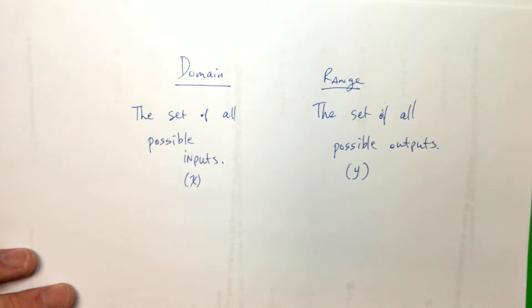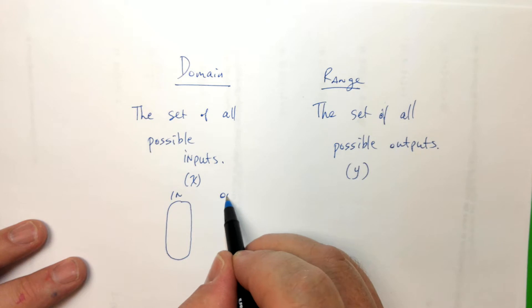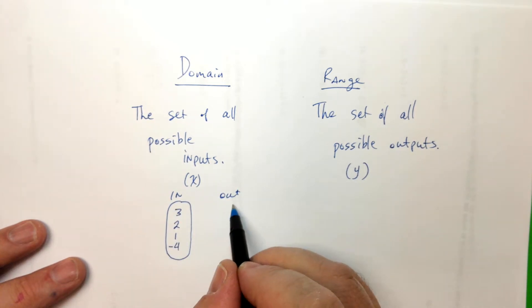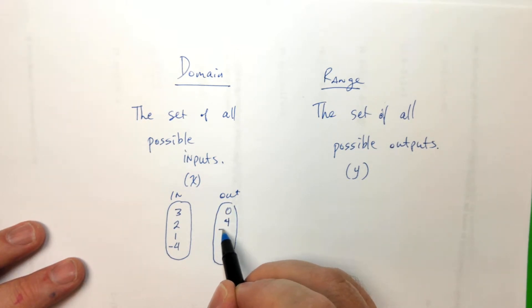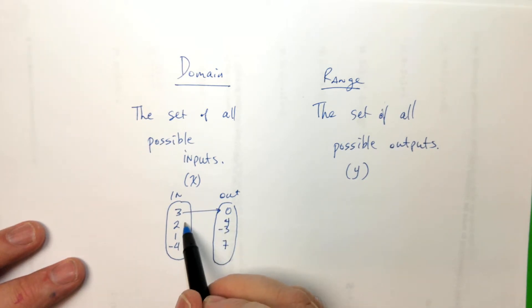So like in the first example we did. I'll just go ahead and redraw it. Like we had this for in, and we had this for out. So we had like when we still had it being a function. And so we had 3 to 0, we had 2 to 0, we had negative 4 to 4. And we had 1, but we'll just do this. It's good enough. I messed it up from the original. Remember, 2 went to 7.